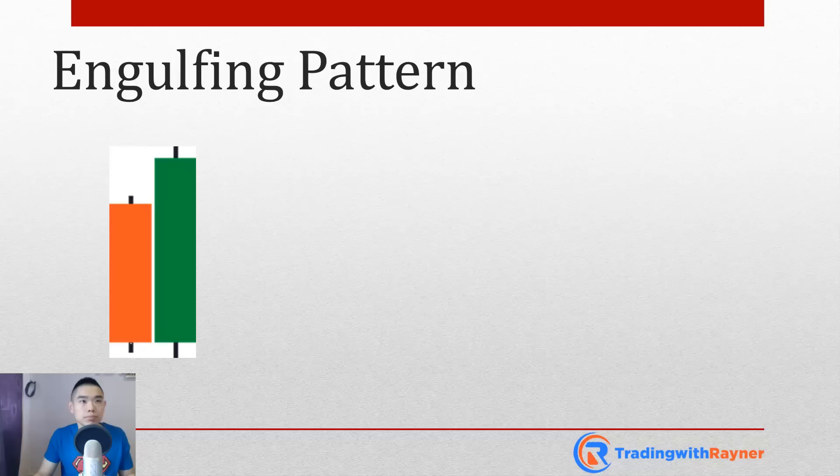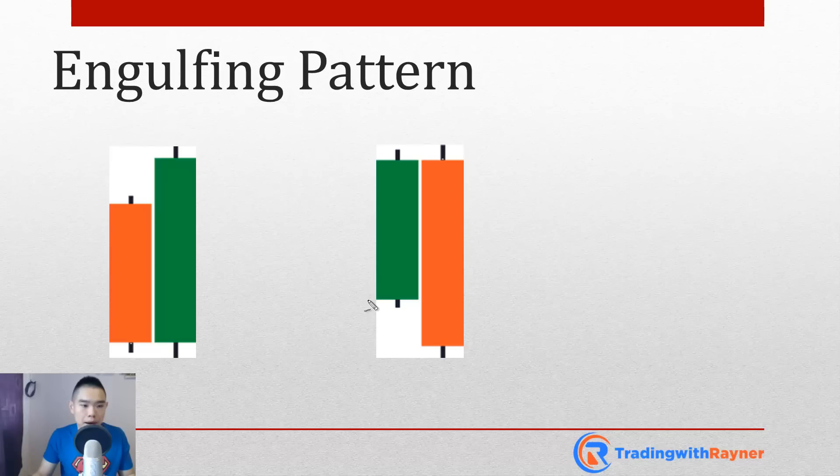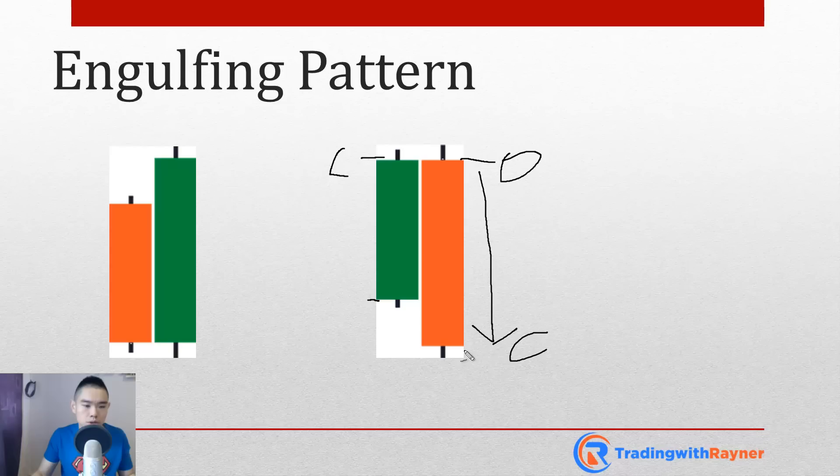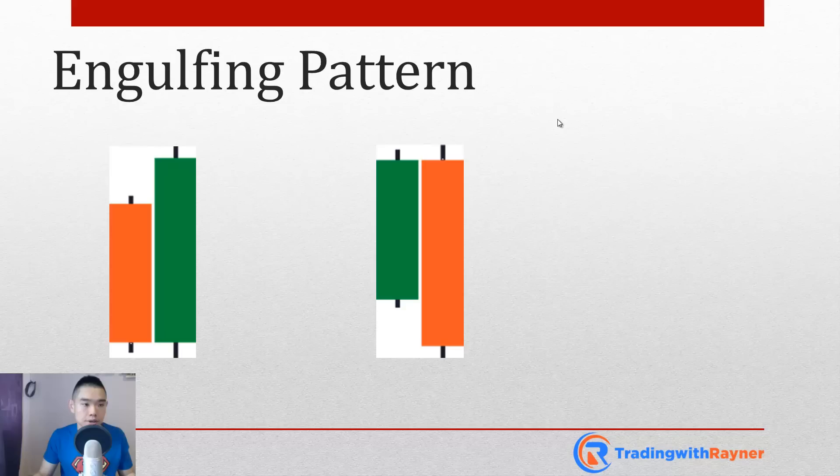The bearish engulfing pattern is the opposite: the first candle is bullish — buyers in control, closing near the highs. Then sellers take charge, open near the highs, smash price lower, and close near the lows. This is a bearish engulfing pattern telling you sellers are in control. The engulfing pattern is very useful for identifying market reversals.